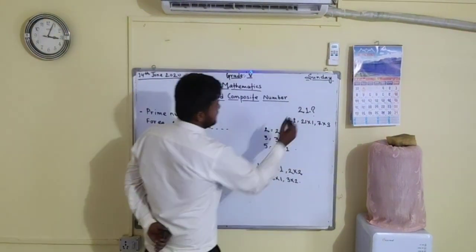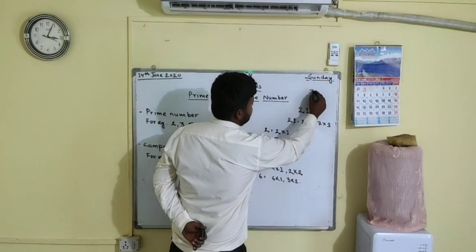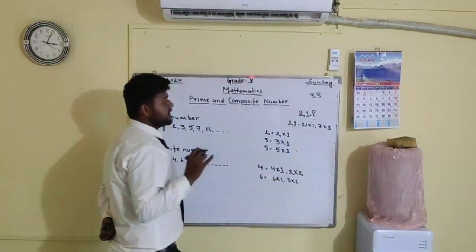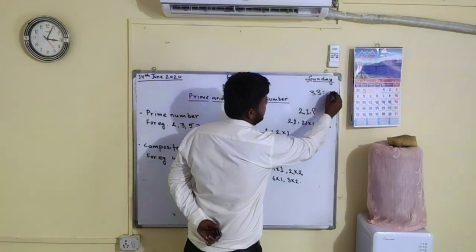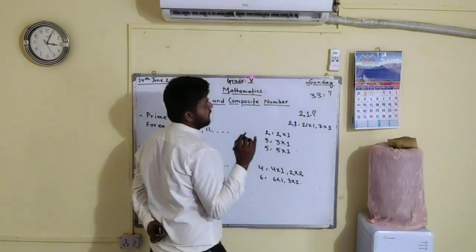Students, 33 — is this 33 a prime number or a composite number? This 33 is also a composite number.